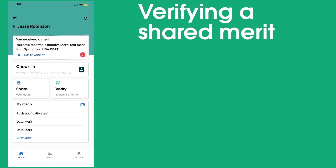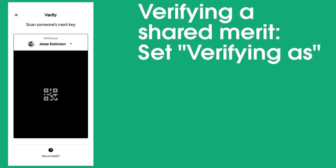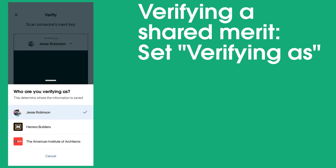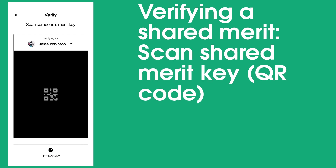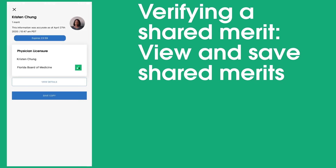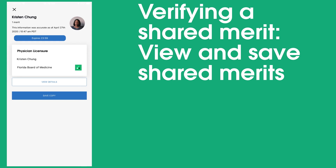If someone is sharing their Merits with you using a Merit key, you can verify from the app. From the main screen, select Verify Someone's Merits. On the next screen, you can select whether you want to verify as an individual or as an organization of which you are an admin. This will determine where the shared Merits are stored if you choose to save them. The Verify screen will show the view from your mobile device's rear-facing camera. Hold your camera up to the Merit key that is being shared. Your screen will now show the shared Merits. Here, you can select View Details to see the data within each shared Merit.